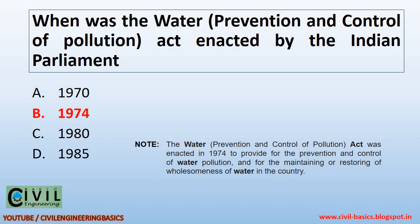When was the Water Prevention and Control of Pollution Act enacted by the Indian Parliament, in 1974? The Water Prevention and Control of Pollution Act was enacted in 1974 to provide for the prevention and control of water pollution, and for the maintaining or restoring of wholesomeness of water in the country.